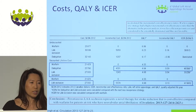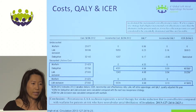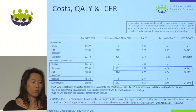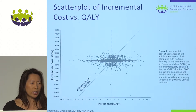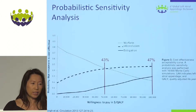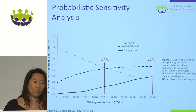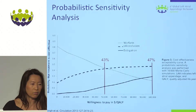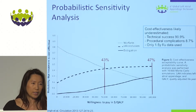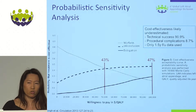Dabigatran was actually considered extendedly dominated by Watchman and not favorable. So their conclusion was that LA closure was cost-effective compared to warfarin. To be a little more cynical, if you look at the scatter plot, results are really all over the map and in all four quadrants, with a lot of uncertainty in these estimates. At a willingness-to-pay threshold of $50,000, there was only a 43% probability of Watchman being cost-effective in this study — largely because the complication rates used were from earlier, higher-risk data.